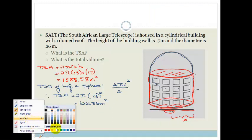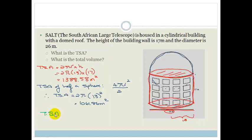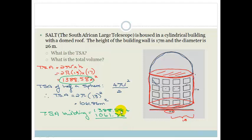Therefore the total surface area of the whole building is the sum of both parts: 1388.58 + 1061.86 = 2450.44 square meters. That is the amount of material you would need to cover the entire building.